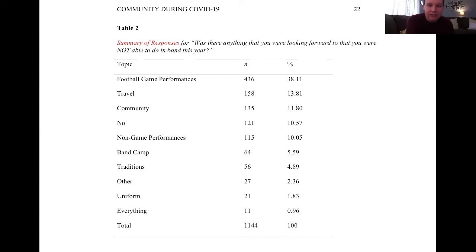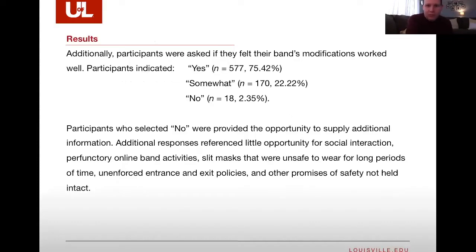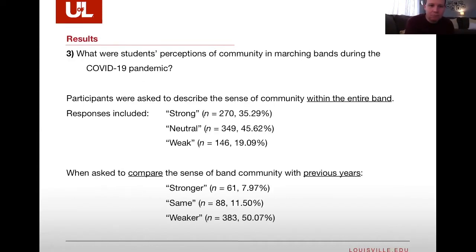Travel and a sense of community were also among the missing activities. Interestingly, 21 respondents indicated they missed wearing their traditional uniform. Participants were also asked if they felt that their band's modifications worked well — most indicated yes. Regarding the sense of community within the entire band, responses included a strong sense of community at 35%, neutral at 45%, and a weak sense of community at 19%.